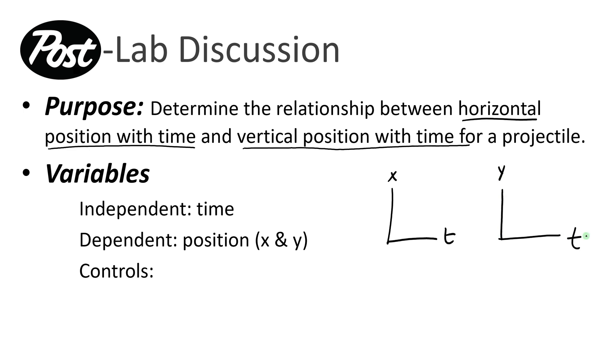The independent variables for both of these relationships is time and the dependent variable is going to be position either x or y. Different things that we controlled: hopefully we were able to use a consistent shooting velocity. The mass of the projectile didn't change because there was only one shot. But also the different things that we did in the video analysis itself, like we had to set a length of one meter and we needed to define our direction to orient x and y. So you'll want to talk about all the different things that we did to get the video into a place where we can actually analyze it using LoggerPro.